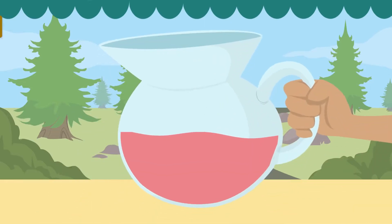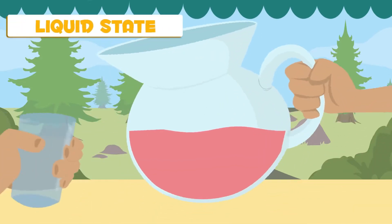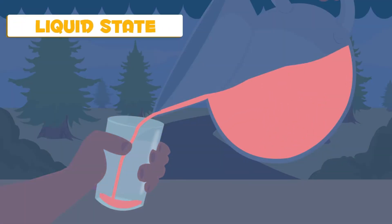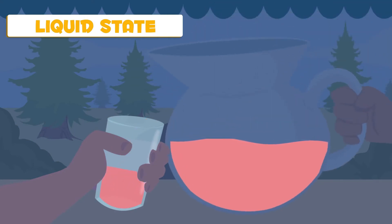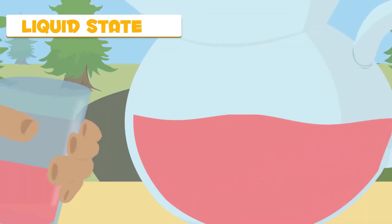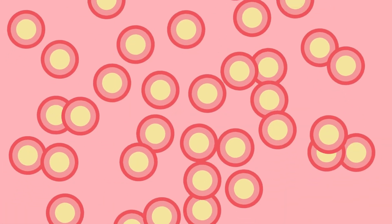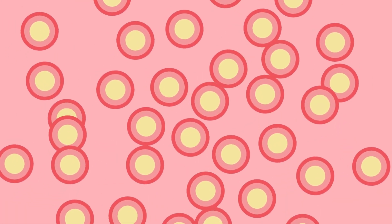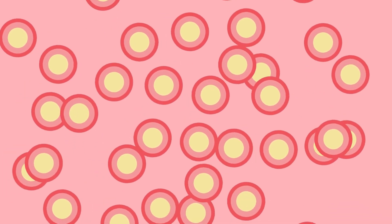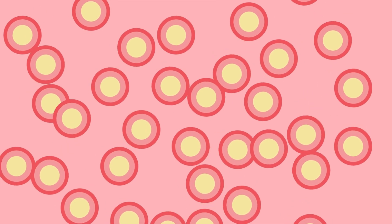Matter in its liquid form takes up a certain amount of space, but liquid does not have a definite shape. It shapes itself like the container it is in. Under a microscope, its tiniest particles slide past each other. They have room to move around, and that's what lets them change their shape to match the container.